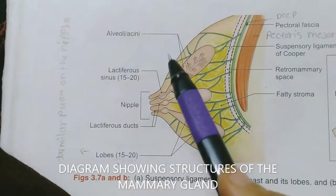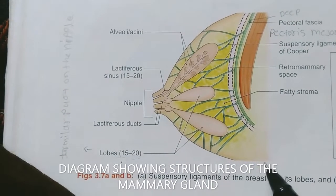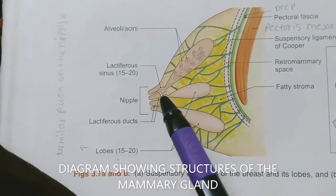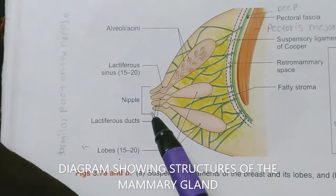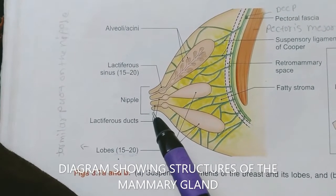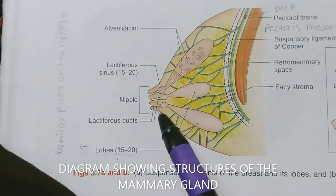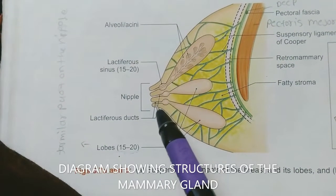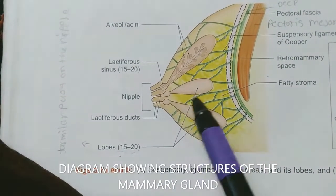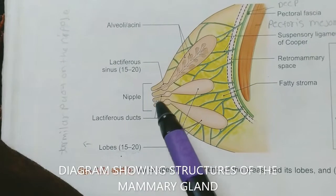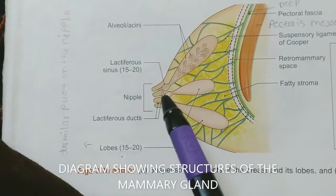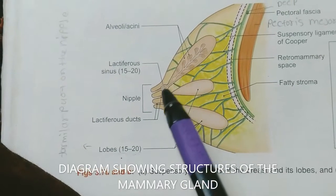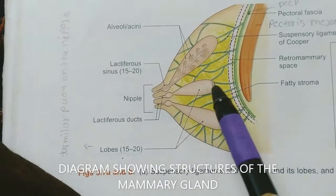This is the skin of the mammary gland, which has two important structures. First is the nipple, which is in the form of a conical projection. Second is the areola, which is the circular area surrounding the nipple.